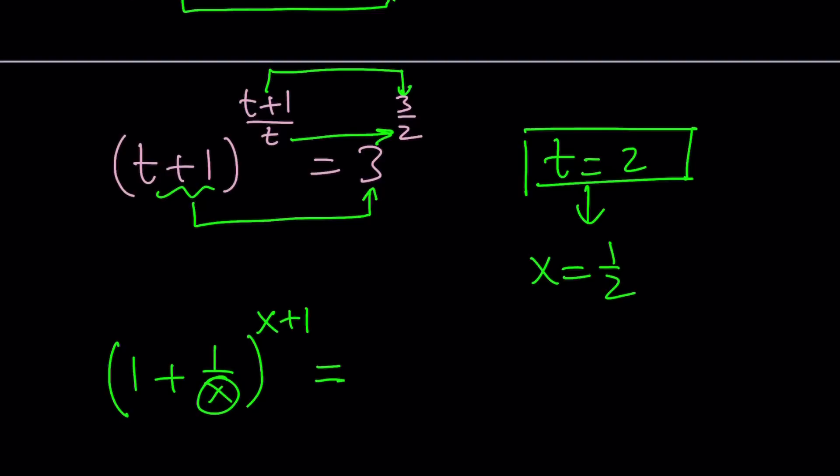Because this would be 1 over 1 half, which is 2. Then you'll get 1 plus 1 over 1 half, which is 3. And then to the power of 1 half plus 1. And this would be 3 to the power of 3 halves. After doing a little bit of work, we could verify it. So x equals 1 half is a good solution. Are there any other solutions?